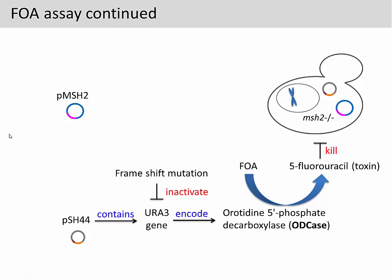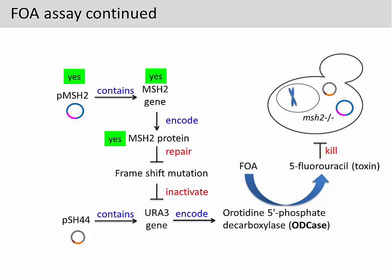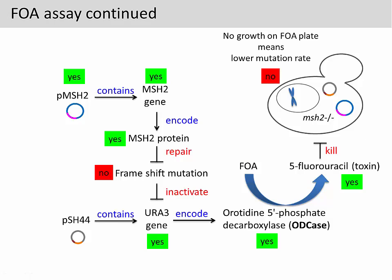On the other hand, the yeast also contains the PMSH2 plasmid that we introduced into the yeast. This plasmid contains the MSH2 gene that encodes the MSH2 protein. When the plasmid is present, the MSH2 protein is present. This will repair or block the frameshift mutation from occurring. Therefore, there is no mutation, which means the URA3 gene will stay active, producing an enzyme that turns FOA into a toxin, and that's going to kill the yeast. Therefore, in an FOA assay, no growth on the FOA plate means the mutation rate is low. On the contrary, if the yeast grows on the FOA plate, that means the mutation rate is high.